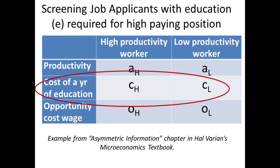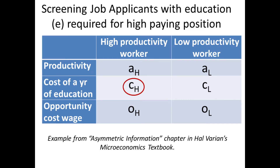To think about cost, we need to understand that the two workers differ in how difficult school is for them. For the high productivity worker, obtaining an education is pretty easy and doesn't require a whole lot of effort. For the low productivity worker, every semester of that same education is painstaking, and we're going to translate pain and effort per semester into a dollar value — because we're economists and that's what we do. That's how to think about CH and CL.